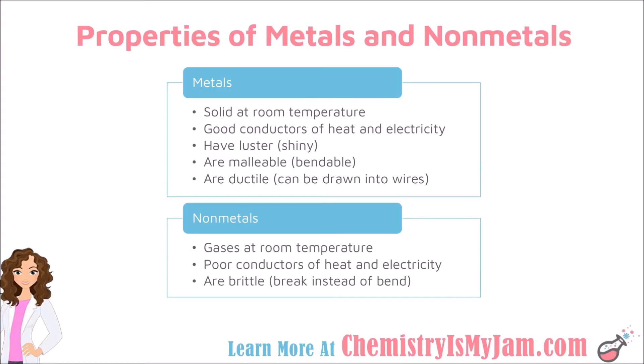These are the properties of metals and nonmetals. Think about aluminum foil — it is solid at room temperature, it's a good conductor of heat and electricity, it has luster which means that it's shiny, it's malleable which means that it's bendable, and it's ductile meaning you can draw it into wires. Those are the common properties of metals.